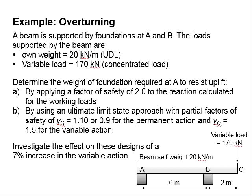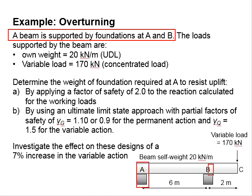Let us try an example to use the factor of safety in order to check for the stability in terms of overturning. In this question, a beam is supported by foundations at A and B.